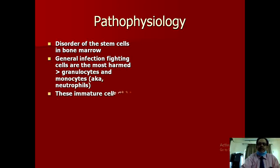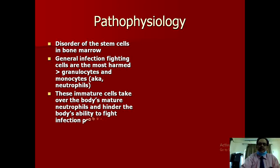The pathophysiology of CML is that it is a disorder of the stem cells, which are the general infection-fighting cells. What happens is that the immature cells produced during the disease take over the body's mature neutrophils, and they impair, compete with, inhibit, or hinder them from defending the body — hindering the body's ability to fight infections properly.